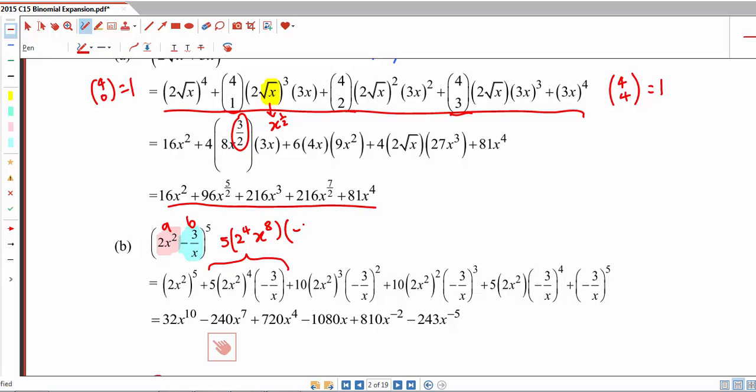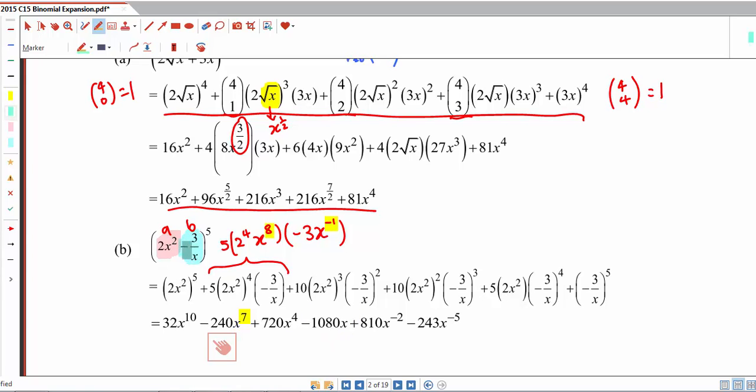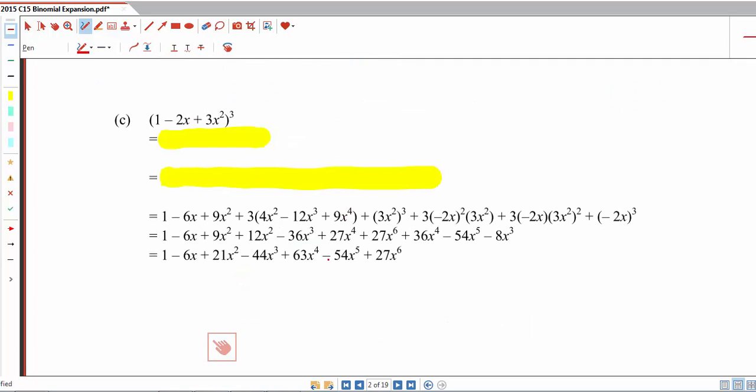And this is negative 3, x to the power of negative 1. So we can combine the powers of x to become x to the power of 7. Now notice that if our b is negative, we actually have alternating signs in our binomial expansion.